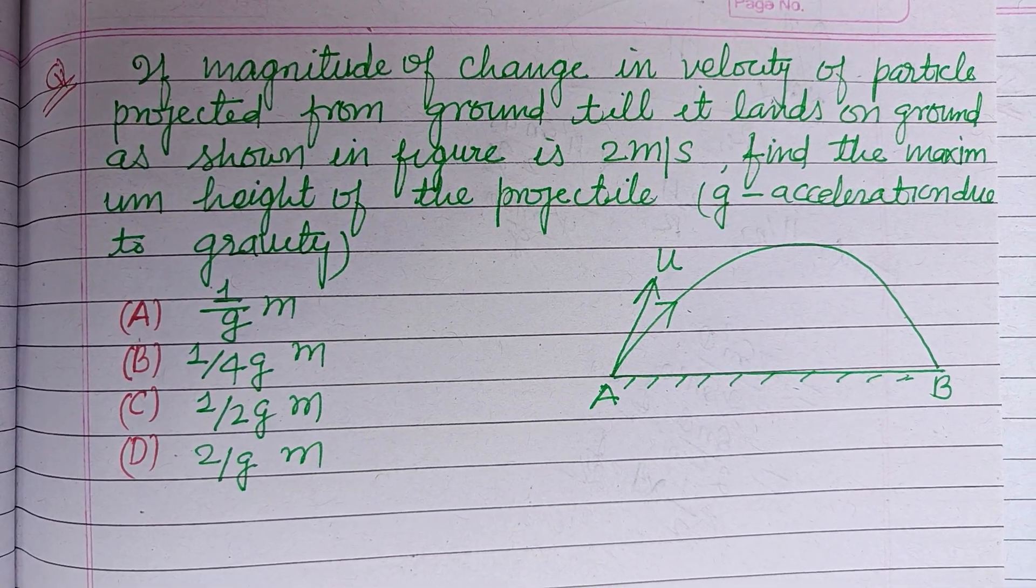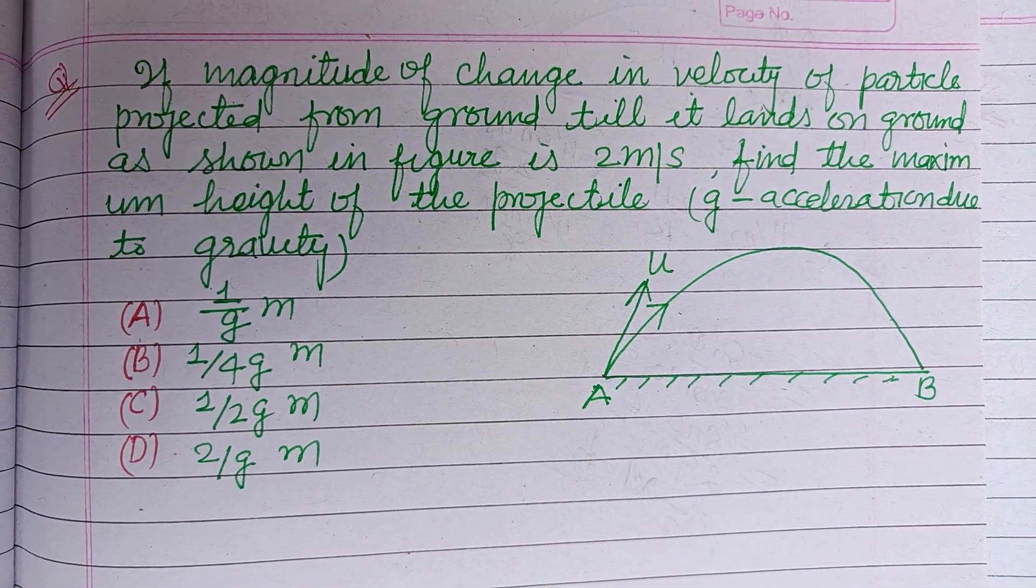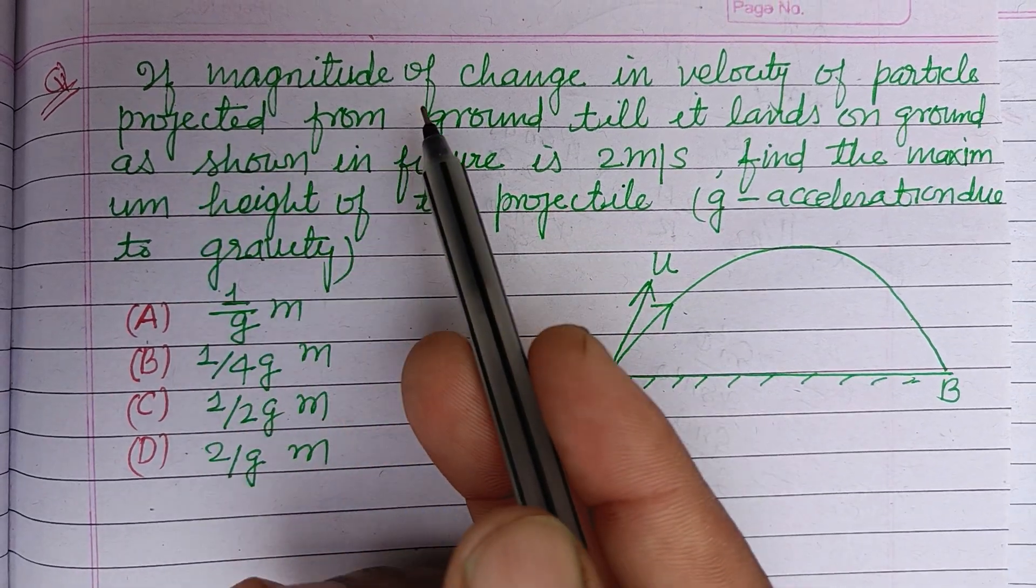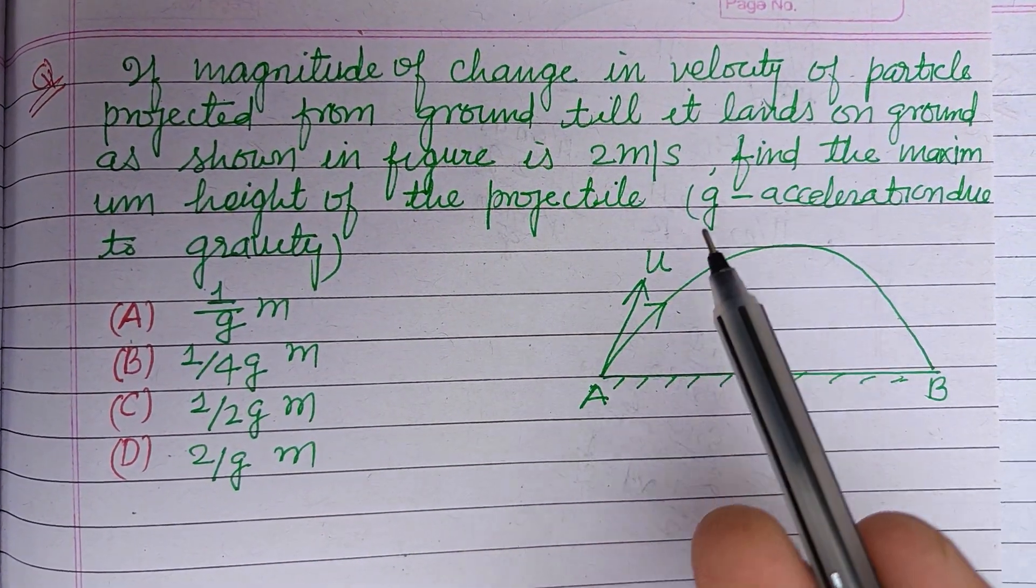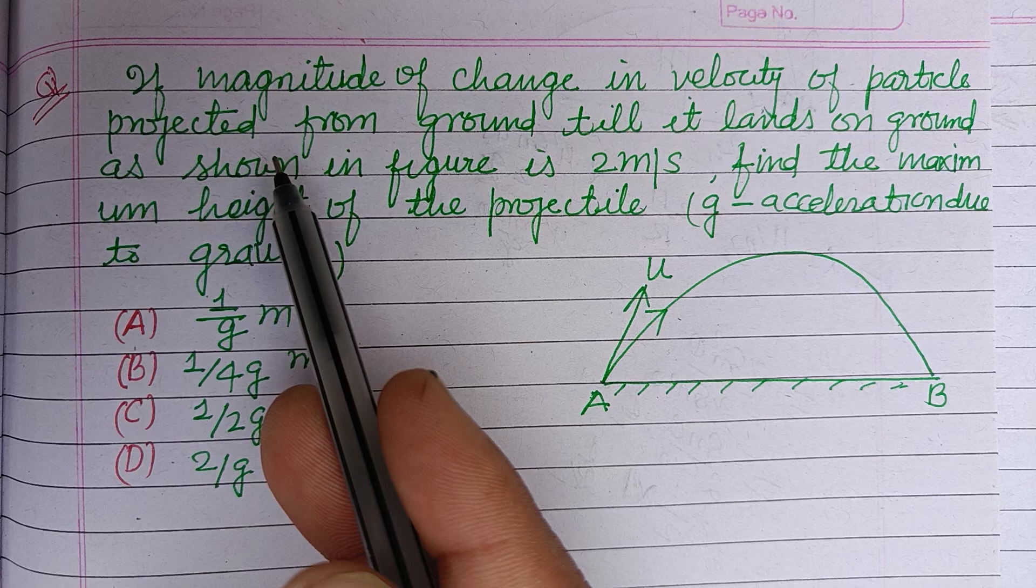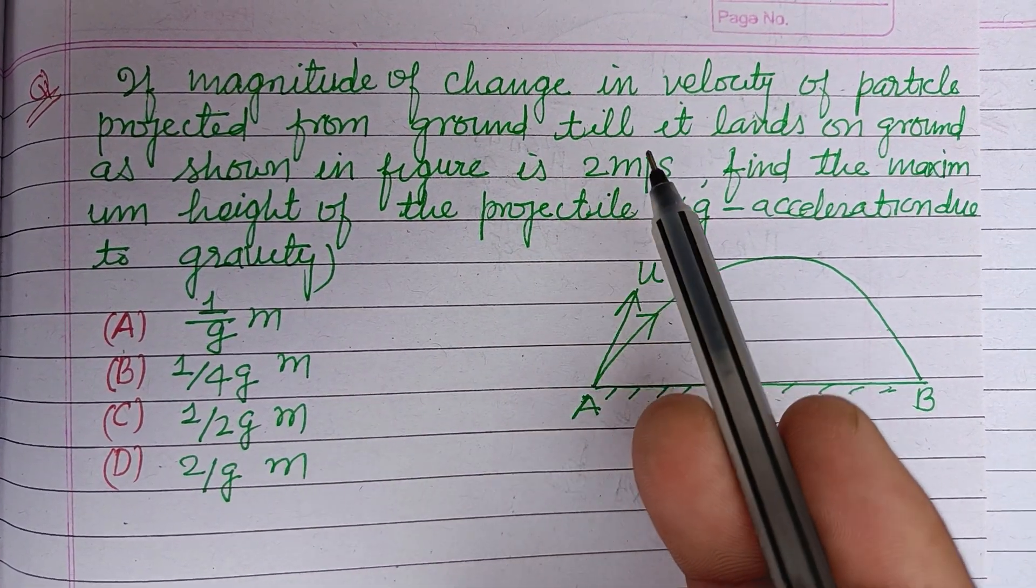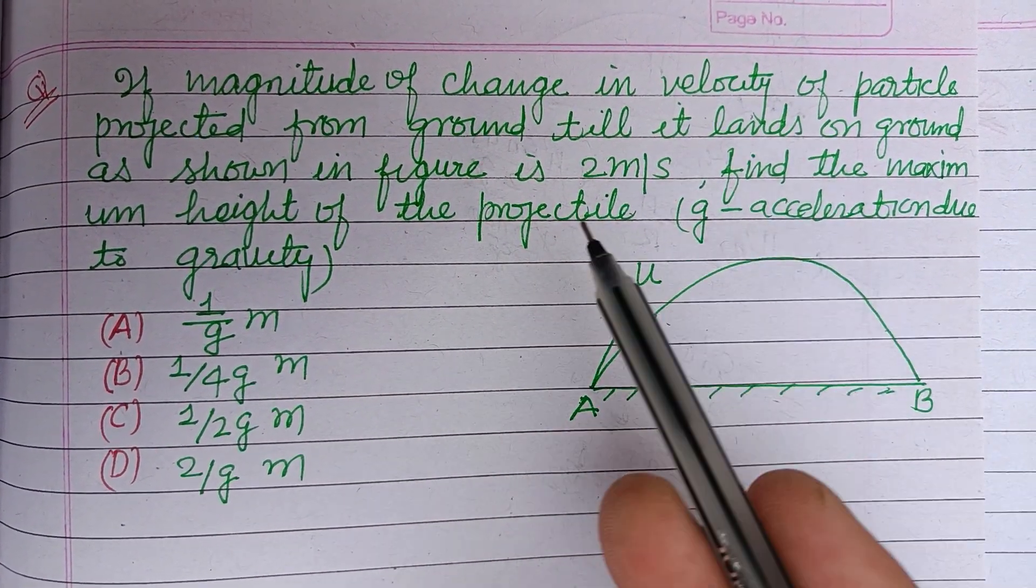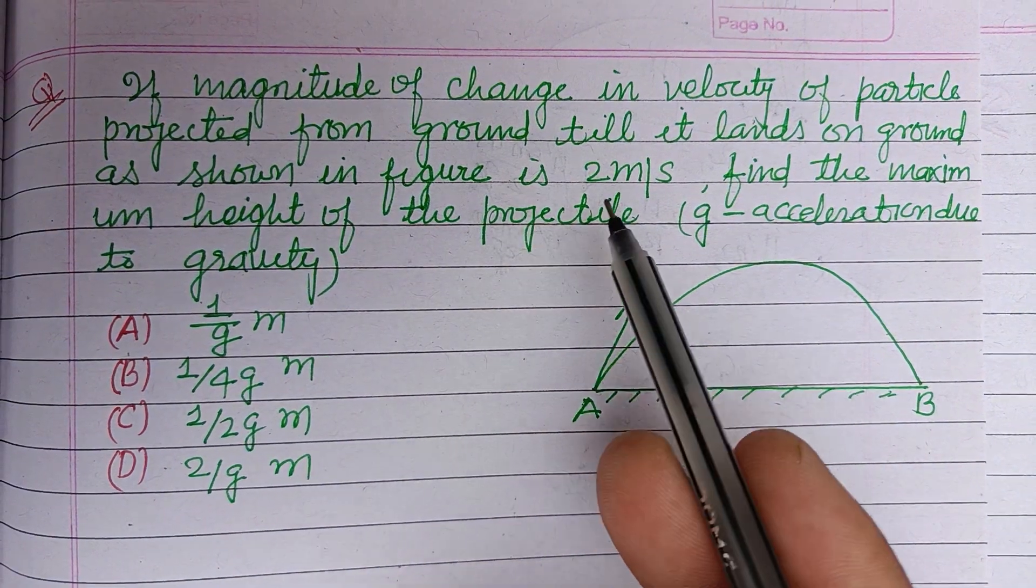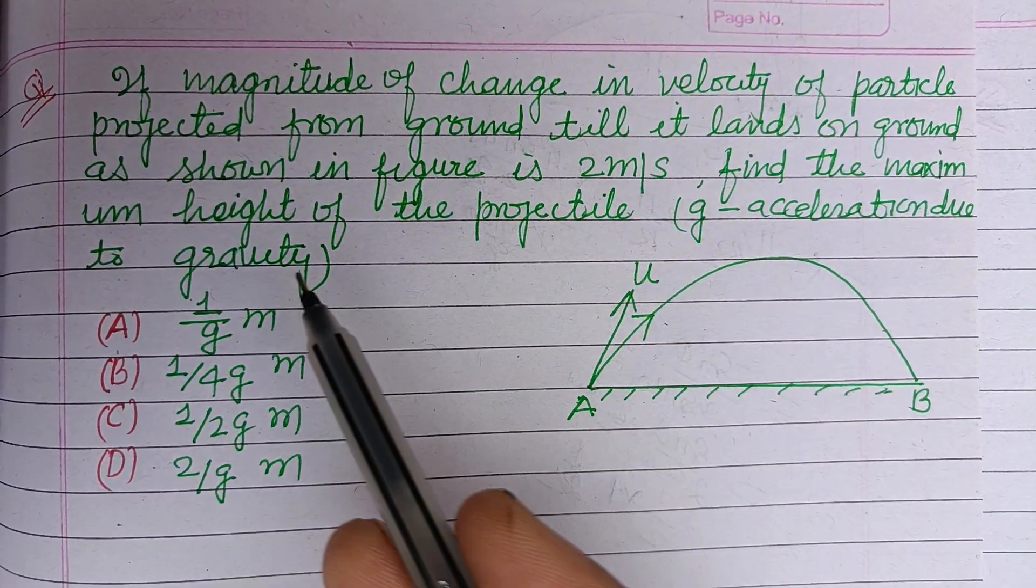Hello viewers, warm welcome to this YouTube channel. The question is: if magnitude of change in velocity of particle projected from ground till it lands on ground as shown in figure is 2 meters per second, find the maximum height of the projectile.